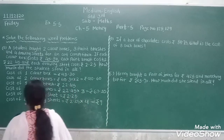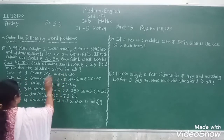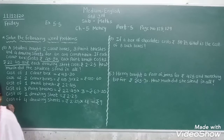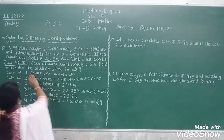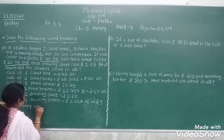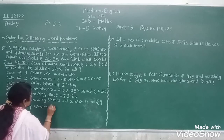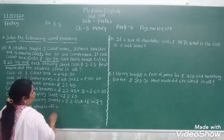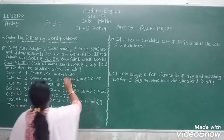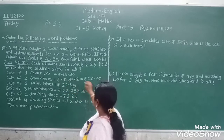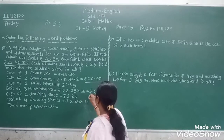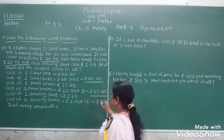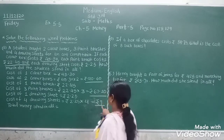Finally, we write total money spent. What is the total money? Cost of two color boxes: Rs. 90.60 paise. Cost of three paint brushes: Rs. 67.35 paise. Cost of four drawing sheets: Rs. 9.